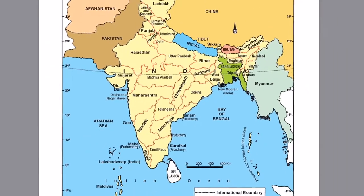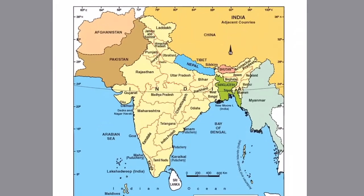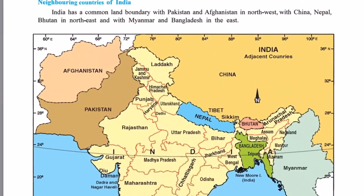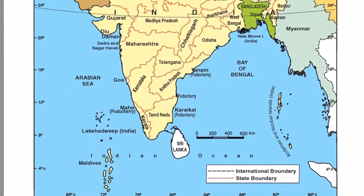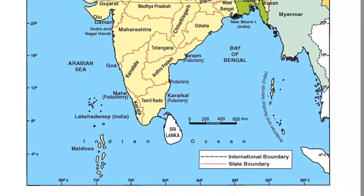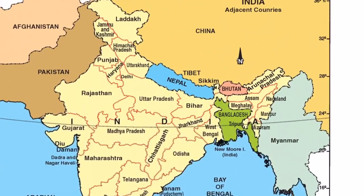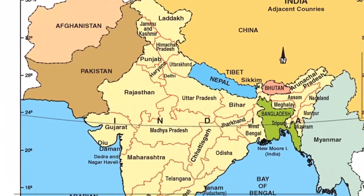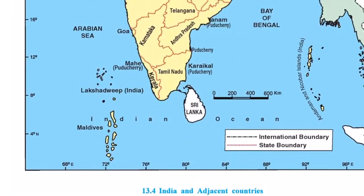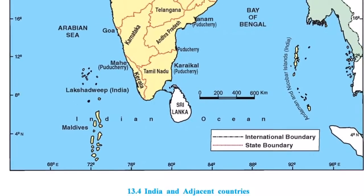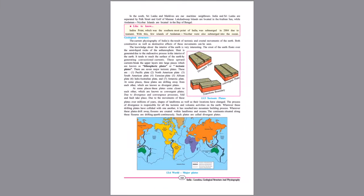Looking at our neighboring countries — as shown on the map — India's neighbors include Pakistan, Afghanistan, China, Bhutan, Myanmar, Nepal, and others. These countries share a land border with India, except Sri Lanka, with which we share a 32-kilometer sea border.